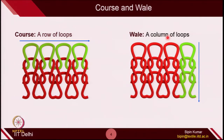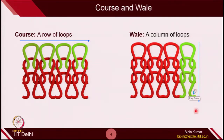The next two terms which are quite common in knitting are course and wale. Course is nothing but a row of loops — all loops along a row are called a course. If you carefully see the green segments, you have four loops in one course. Similarly, along the column side, we call it wales. A column of loops is called a wale. If you see this structure, there are four columns, meaning four wales, and three rows, which are called three courses.